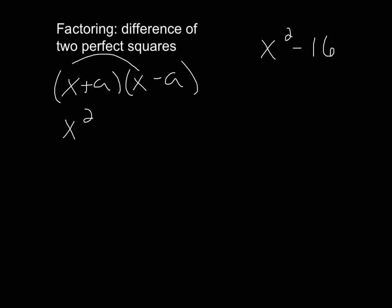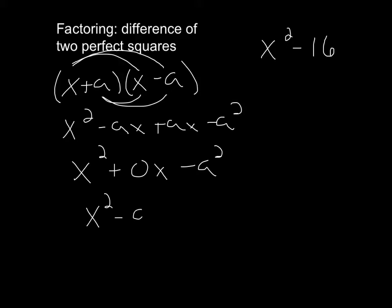So let's just see how this multiplies back out for us. We get x squared, we get minus ax plus ax minus a squared. And we see this would leave us with x squared plus 0x, we see with that, minus a squared, and obviously we don't usually write 0x, but we could just notice that. And we see that we end up with x squared minus a squared.